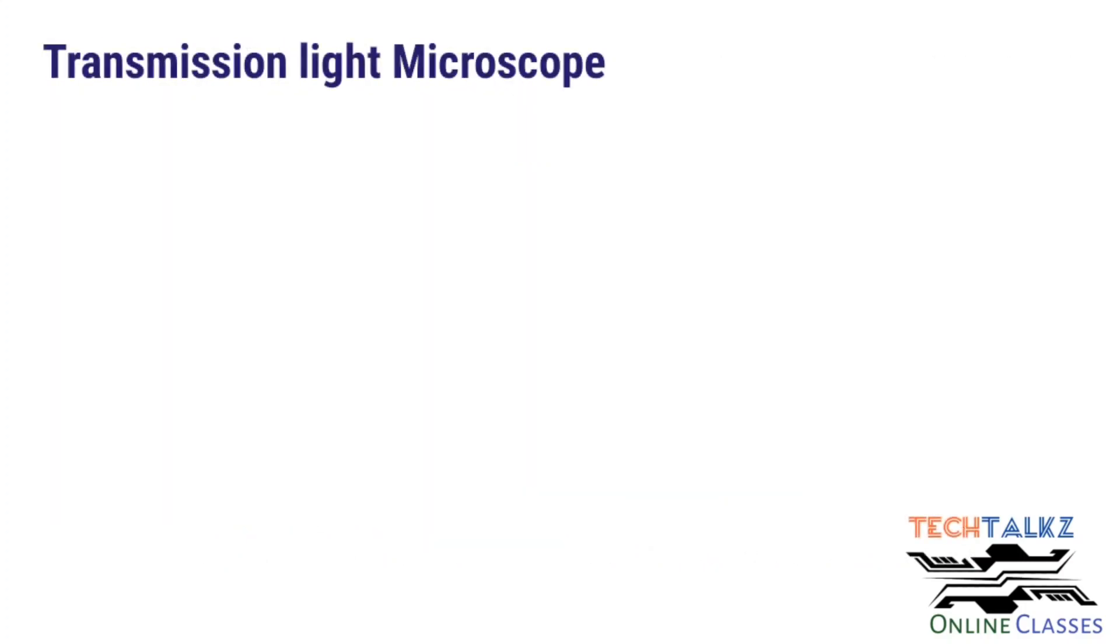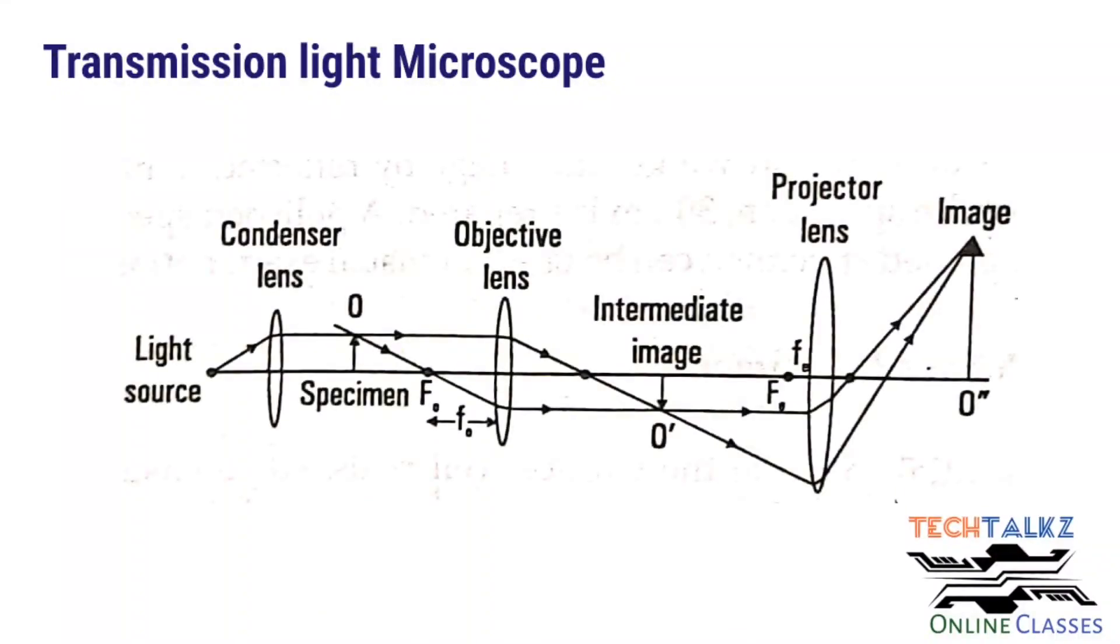Next type is transmission optical microscope. This is the schematic diagram. Here, the image is created from the transmitted light. In the previous one, we have created the image from the reflected light.